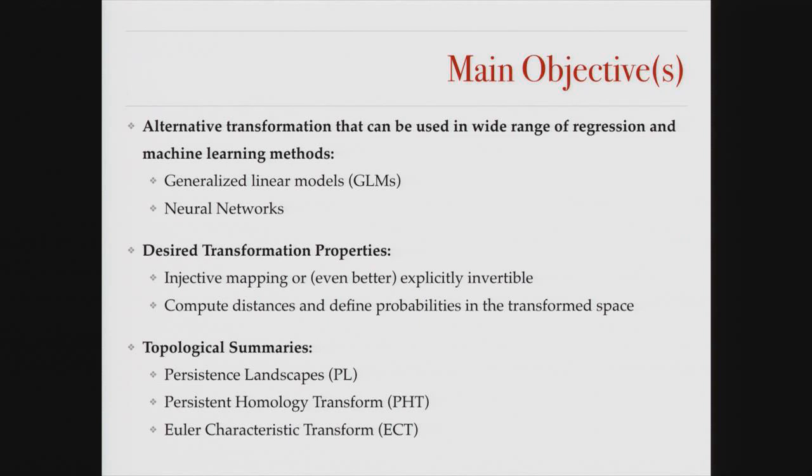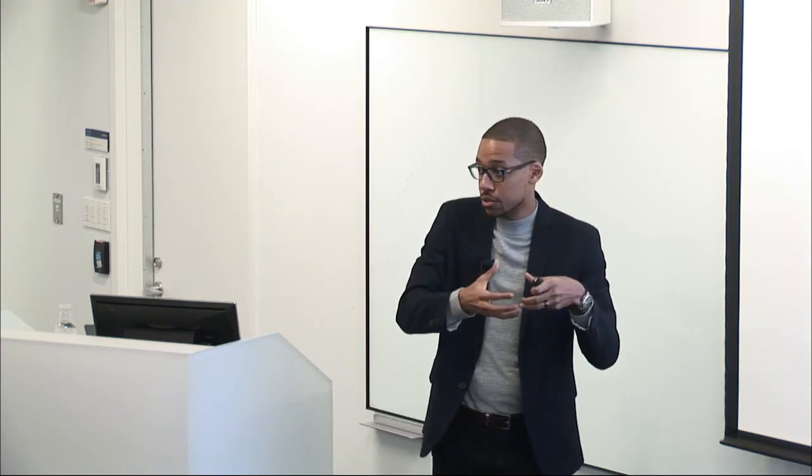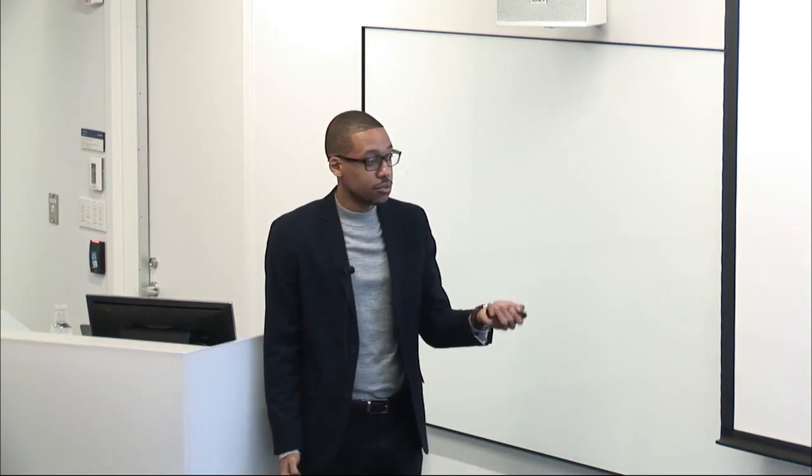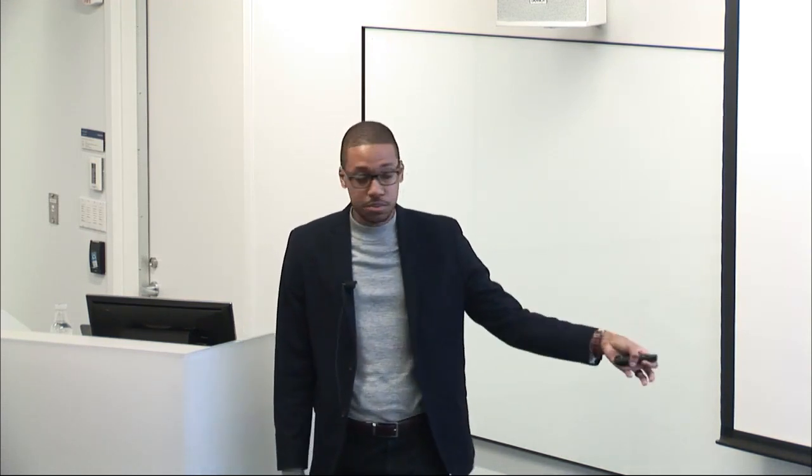The main objectives of my group's work: we want to take shapes, transform the information in this 3D structure to statistics that we can use in a wide range of regression or machine learning type methods — whether in neural networks or just basic generalized linear models. We want the desired transformation to be invertible. When I take the shape and transform it to a statistic representing this morphology, once I understand the most important parts of that statistic, I want to map back onto the original shape what I was looking at. We're going to use topology to do this. There's been a lot of work on persistence landscapes, persistence homology transform, and the Euler characteristic transform.